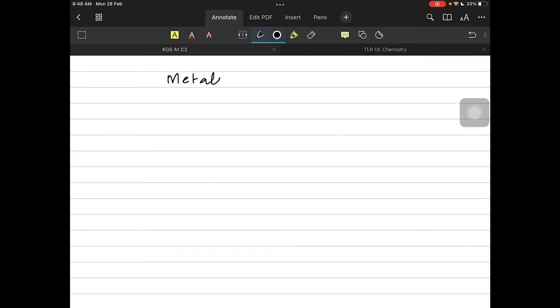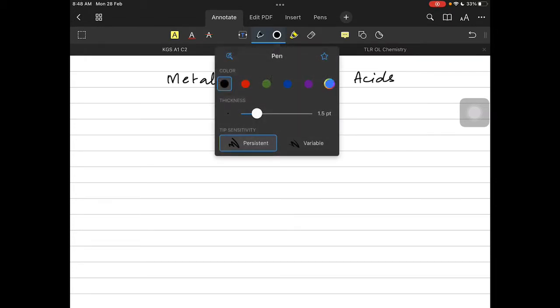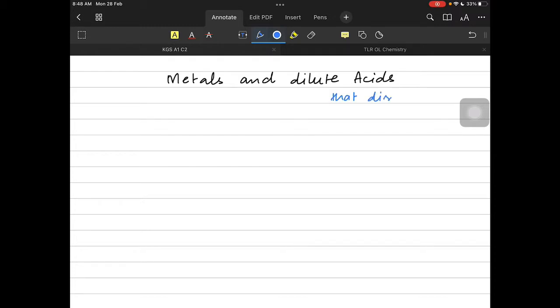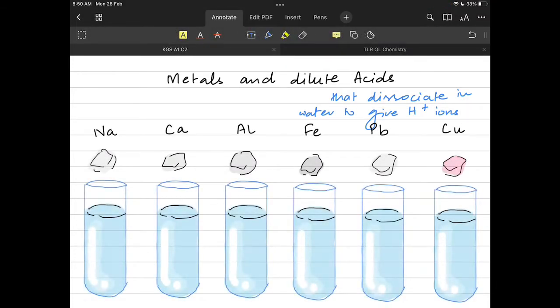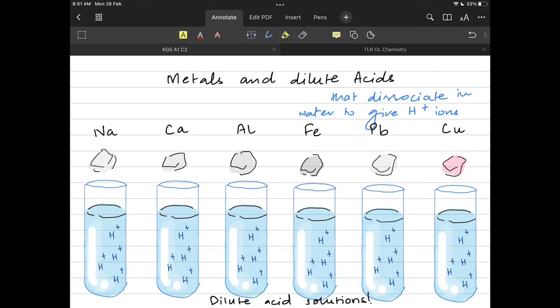Hey everyone, so last time we were talking about the reaction of metals with cold water and steam. Today's video is about metals reacting with dilute acids. Remember, dilute acids or acids in general are substances that dissociate in water to give H+ ions, or you can say hydrogen ions. So let's imagine those same metals, and now let's imagine that we have dilute acid solution instead of cold water.